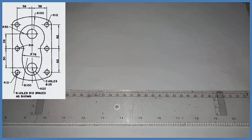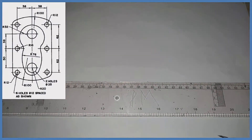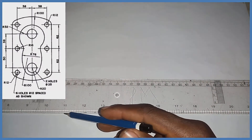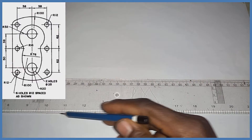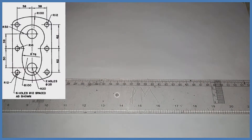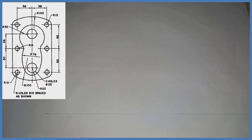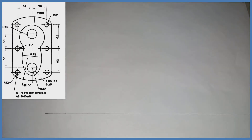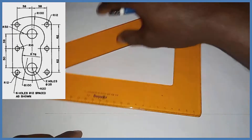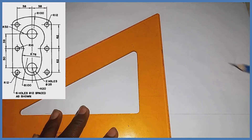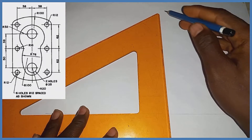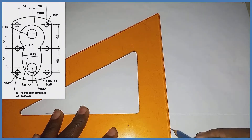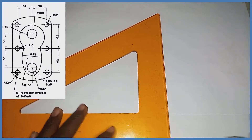To produce the object on the screen, the very first thing we are going to do is produce this horizontal line at the bottom. After producing that horizontal line, I'm going to pick my set square and produce a vertical line to it in this manner.